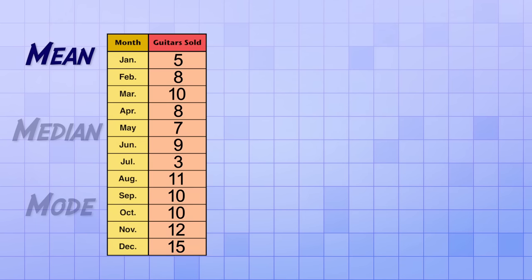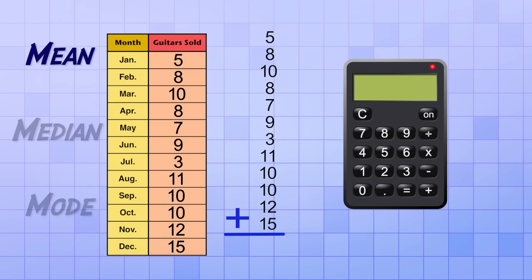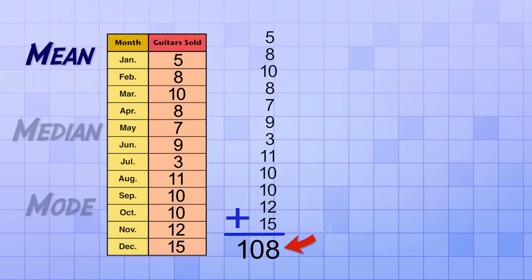First, to find the mean, we need to add up the number of guitars sold in each month. You can do the addition by hand or you can use a calculator if you want to. Either way, be careful since that's a lot of numbers to add up and we don't want to make a mistake. The answer I get is 108. So that's the total he sold for the whole year. But to get the mean sold each month, we need to divide that total by the number of months, which is 12. 108 divided by 12 is 9. So the mean, or average, is 9.